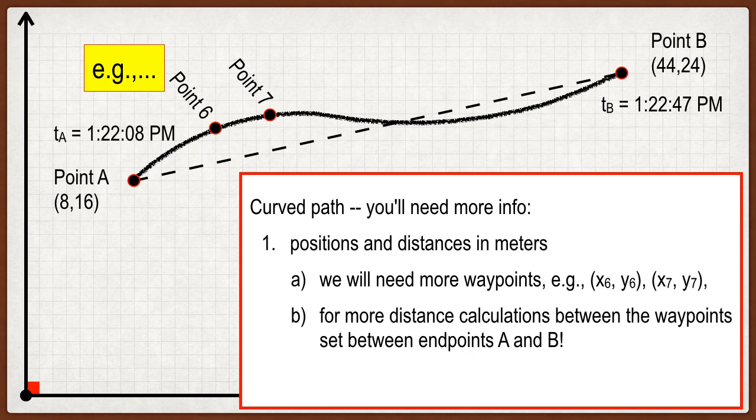You're going to need positions and distances, same as before, but you're going to need a lot more points. If I just tell you the end point and the starting point and the finishing point, and then tell you that it's curved, you don't know where it was or where it went. So you're going to need a lot more way points, like, for instance, point six and point seven. Go ahead and jot down a couple points up there. You're going to have more way points between your end points.